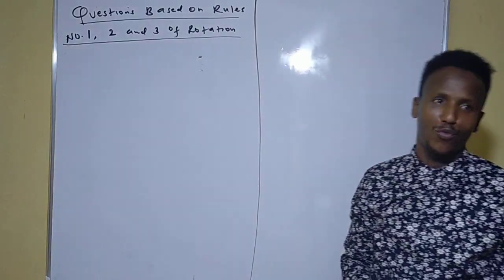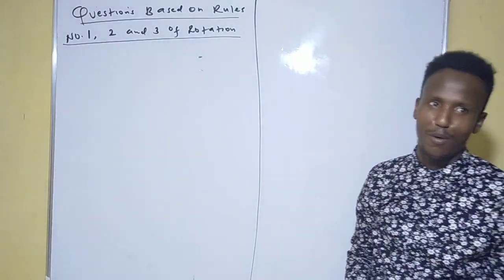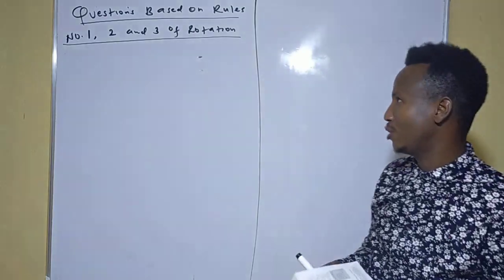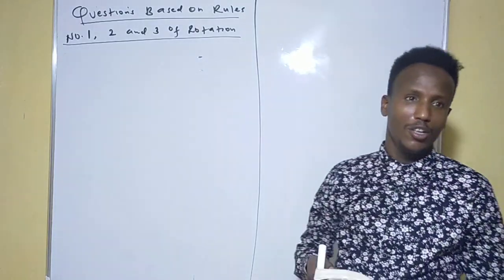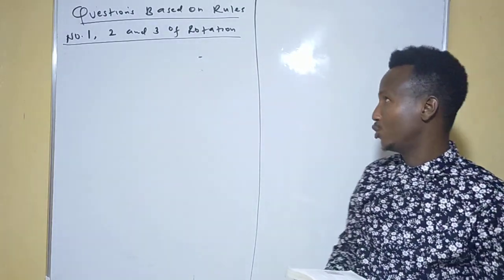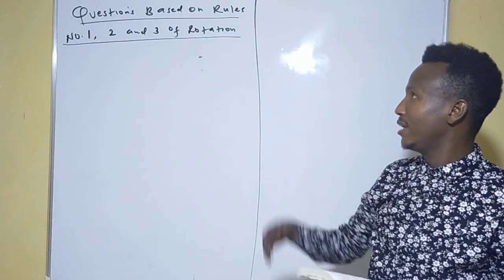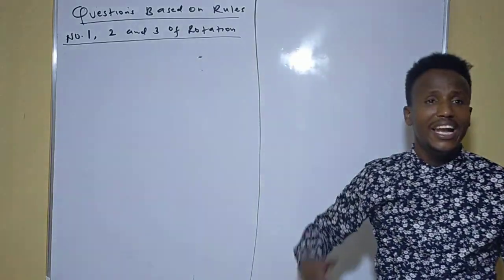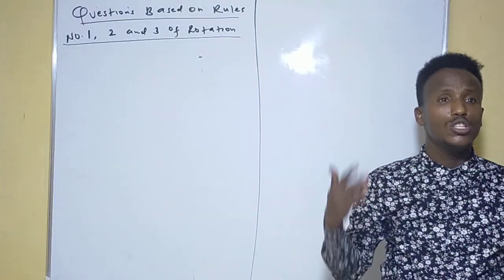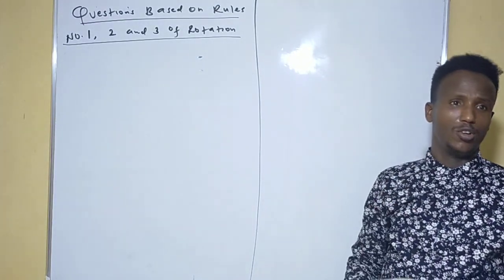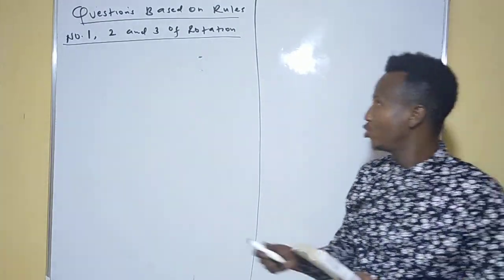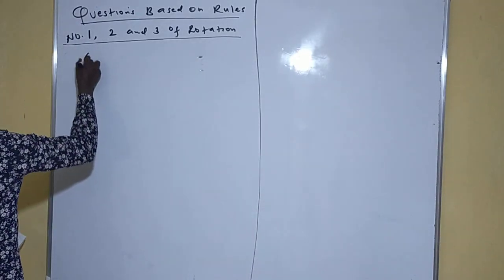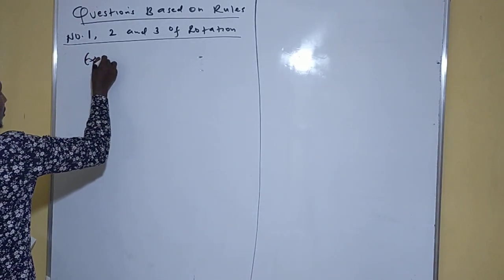We are not dealing with Form 4 or Form 3 this time. We are dealing with Form 2 transformation, particularly rotation, for your information. So now let's take examples of what you have learned and see whether the rules are working. Let's go for Example One.